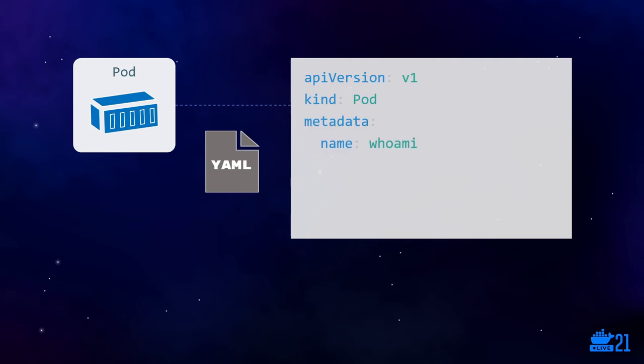Pod specs start with some metadata, which all Kubernetes objects have. In those fields you tell Kubernetes that this YAML is going to describe a pod object using the version 1 API, and the pod is going to be called whoami. Then for this specific object you have your spec, where you describe the containers you want to run inside the pod. In this case I've got one container called "app" that will run from the image "6i/whoami" — a standard Docker image publicly available on Docker Hub. My Kubernetes cluster will pull that image down and start my application in a container wrapped inside a pod.